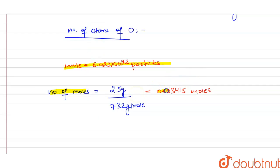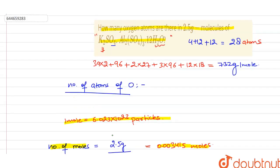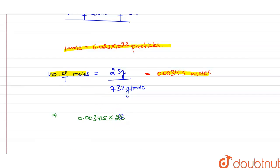So it will be equal to 0.003415, and for one molecule we are having 28 atoms. So it will be 28 multiplied by the Avogadro number, that is 6.023 multiplied by 10 to the power 23 atoms.